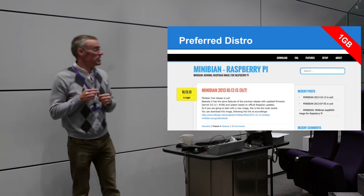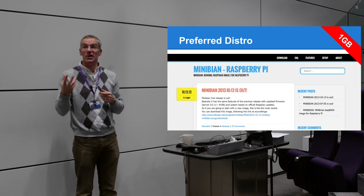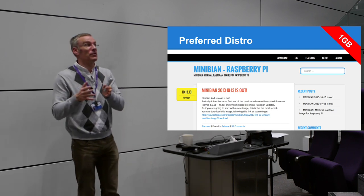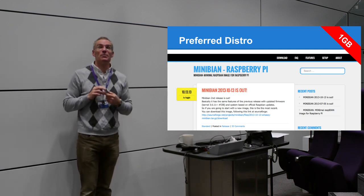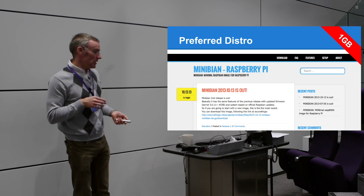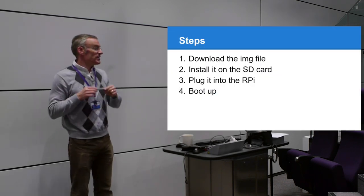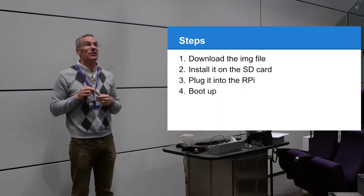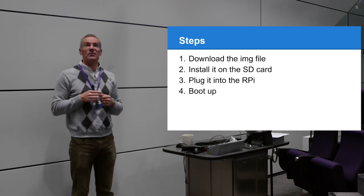We're going to use Minibian, which installs on a 1GB SD card. It's based on Debian, the most popular server operating system on the planet. Half the space is the OS and software, and you've still got half a gig left for data. You download it from SourceForge as an .img file - it might be zipped so you need to extract it - then install it on the SD card using a software tool.